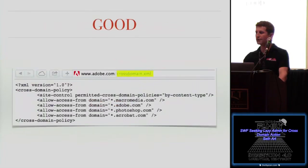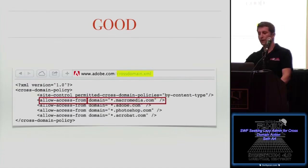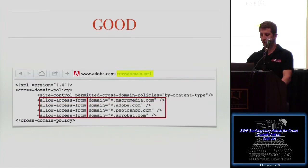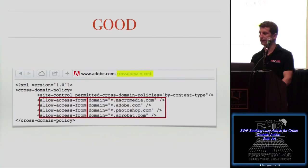Here's an example of the cross-domain.xml file at www.adobe.com. What we're looking for here is the allow-access-from directive — in particular, the domain that is being allowed or trusted. So www.adobe.com will allow a SWF loaded from Macromedia.com, Adobe.com, Photoshop.com, or Acrobat.com to interact with www.adobe.com on behalf of the user.